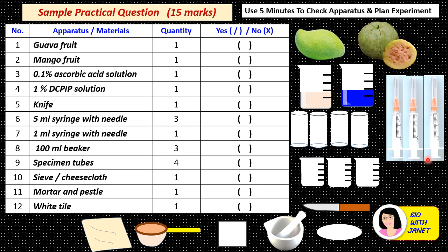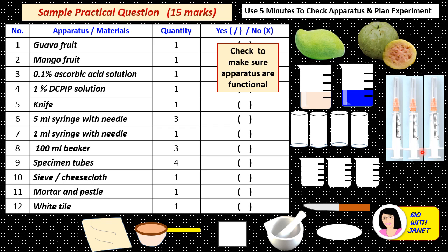Number 5: a knife. Number 6: three 5 ml syringes with needles. Check to make sure that your apparatus are functional — for example, make sure the plunger can move smoothly in and out of the syringe. Number 7: a 1 ml syringe with needle. This 1 ml syringe will be used to draw up 1 ml of DCPIP solution to be put in the specimen tube for the experiment.